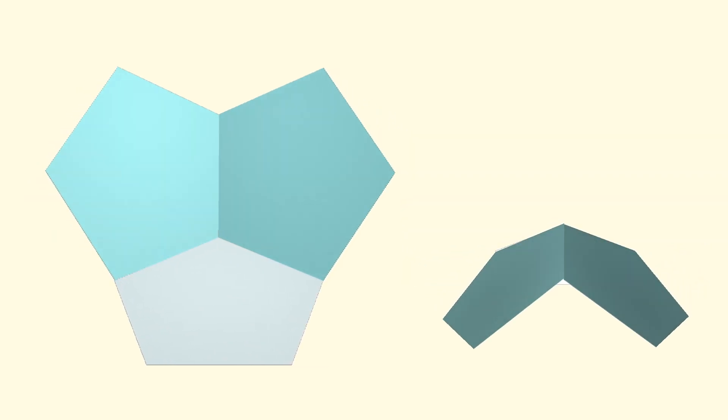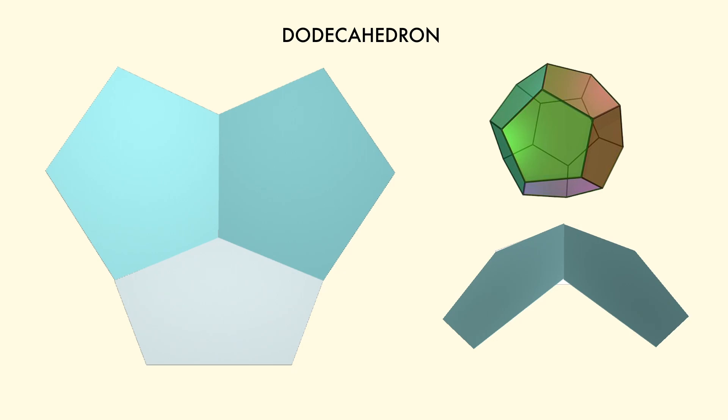We'll then move to pentagons and start with three meeting at a vertex, which barely leaves a gap of 36 degrees. But that is enough to fold the pentagons up and get the basis for the dodecahedron, the last platonic solid. There are no more possible shapes because we can't connect another pentagon, obviously, since there's no room and the angles would add to more than 360.